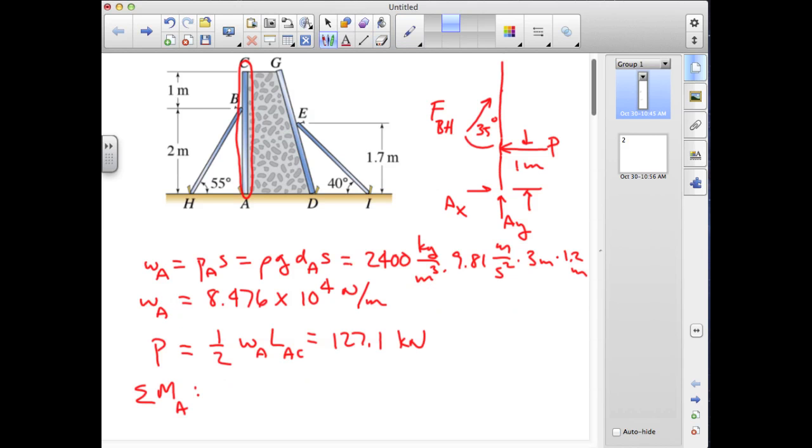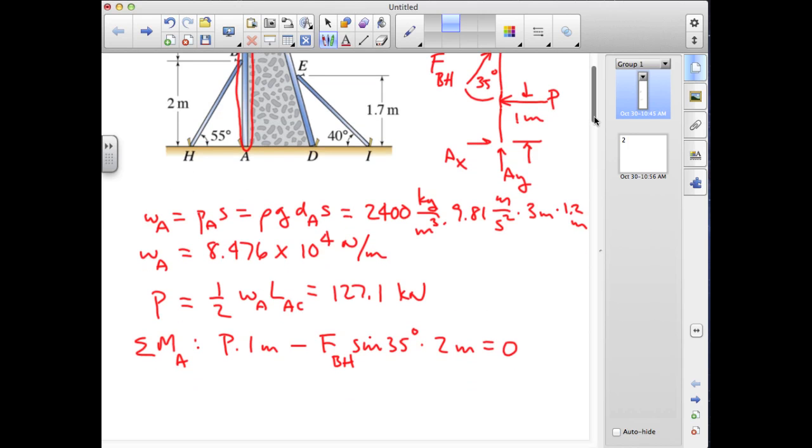Now we can find the load taken by member BH by just taking moment equilibrium about A. The vertical component of BH will have no moment arm, but the horizontal component will. So we have P times 1 meter minus FBH sine 35 degrees times 2 meters equals 0. And if we just solve then, we get FBH is equal to P over 2 sine 35 degrees. And for P equal to 127.1 kilonewtons, this number turns out to be equal to 110.8 kilonewtons.